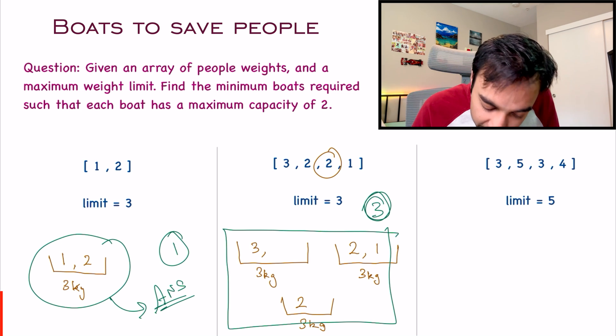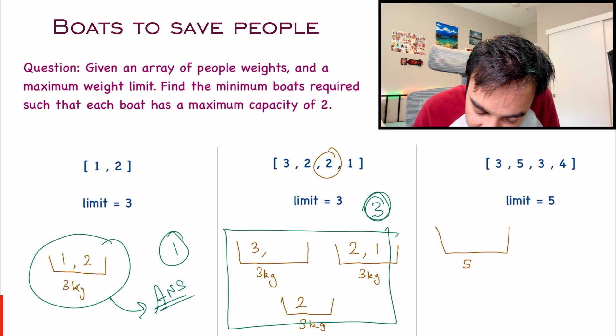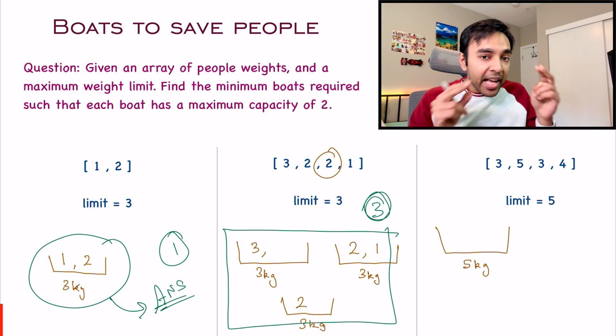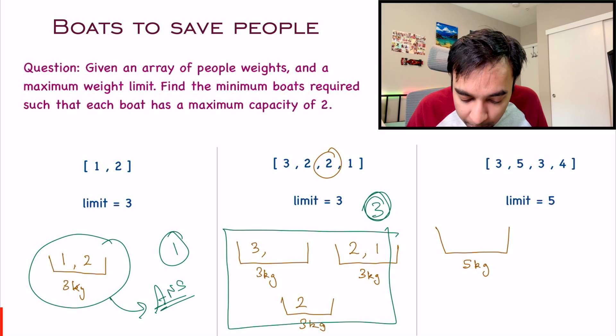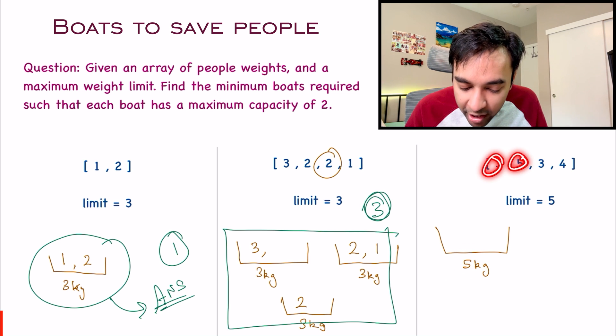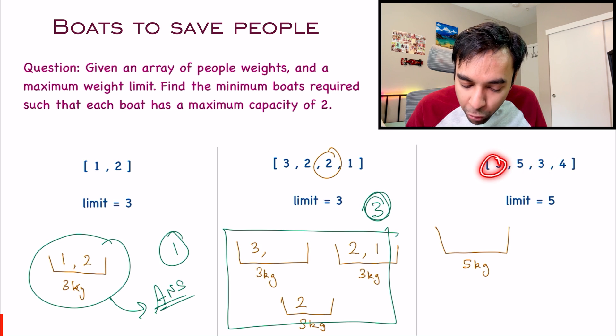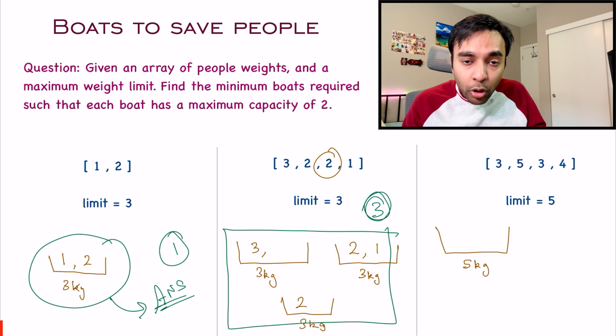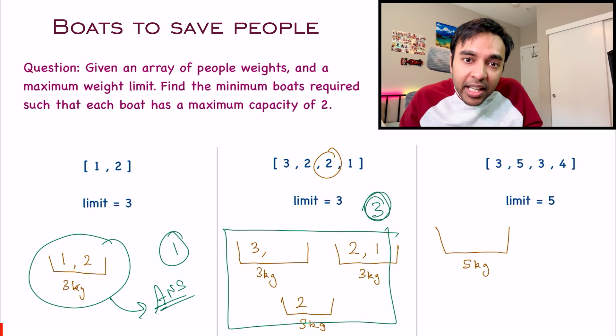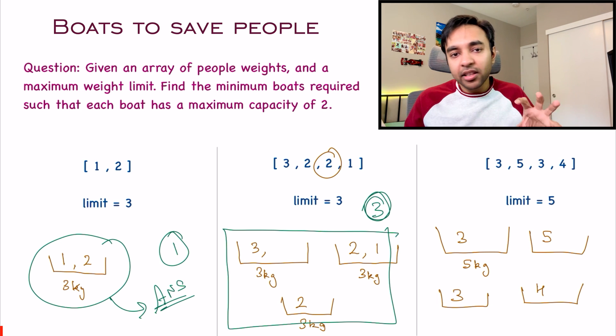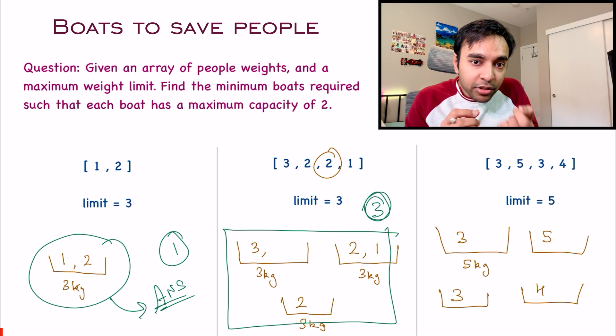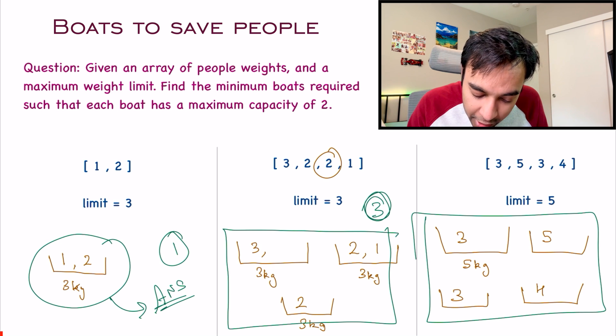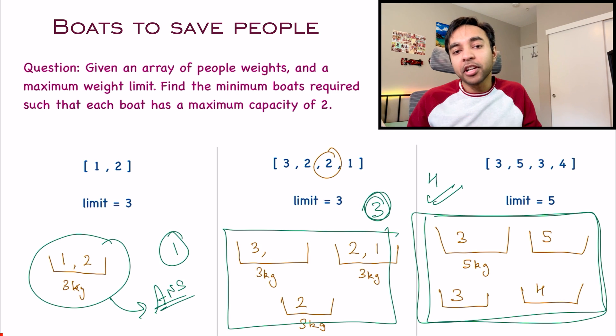Let us look at the last test case now. In this example, the limit of the boat is 5 kg. But if you notice, I cannot place any 2 persons in the boat. As soon as I pick 2 people, the weight becomes greater than 5. 3 and 5 is 8, 3 and 3 is 6, 3 and 4 is 7. There is no combination by which I can fit more than 1 person in the boat. In your last case, you will have to take 4 boats at the minimum. Each person is going in an individual boat because the boat does not have the weight limit to accommodate 2 people. In your last test case, you will need a minimum of 4 boats. And 4 is your answer.